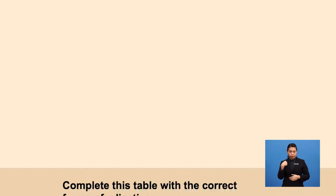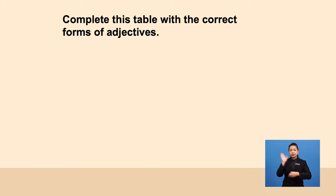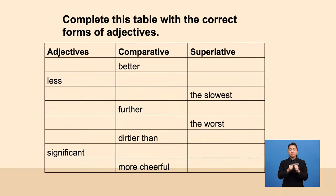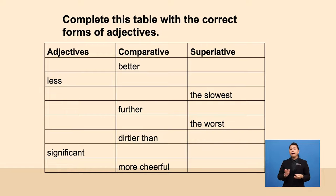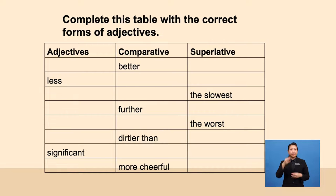Alright, now that we have learned about comparative and superlative adjectives, let's do some exercises. Complete the table below with the correct forms of the adjectives. Some words are given in the table — fill the empty cells with the correct answers. I will give you some time to copy the work, so don't worry.